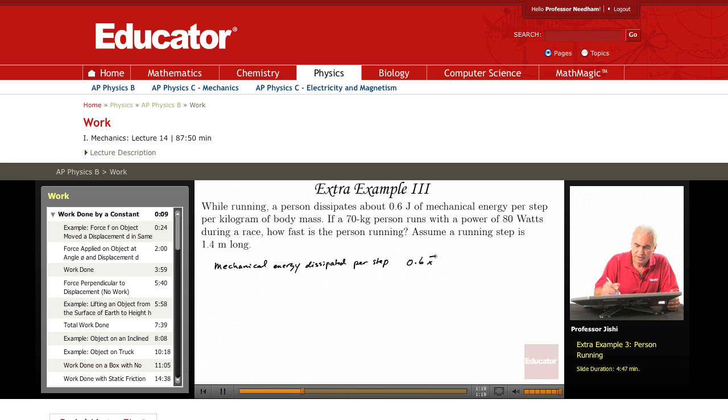That is 0.6 joules per kilogram per step. So, if I multiply by the 70 kilograms, that gives me 42 joules per step. So, every step the person makes, this person dissipates 42 joules.